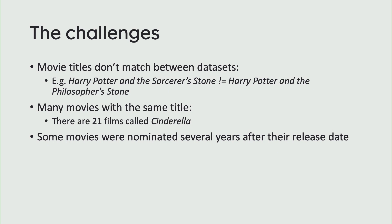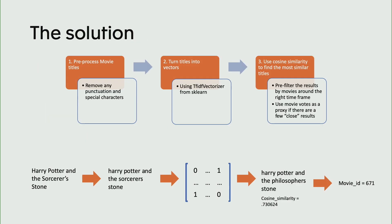There are also other challenges. There are 21 films called Cinderella, in case you didn't know, which is amazing and can be quite challenging. Also specifically around the Oscars dataset, especially going back to the 1930s, some movies were actually nominated for awards upwards of 20 years after they came out. And it gets quite difficult in some real niche use cases.